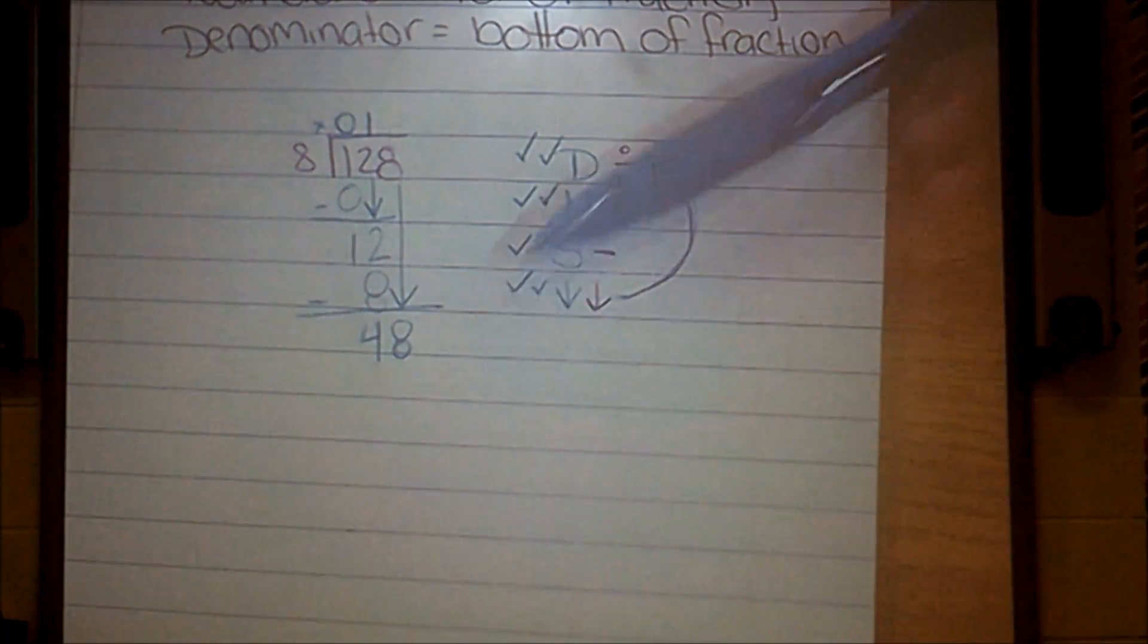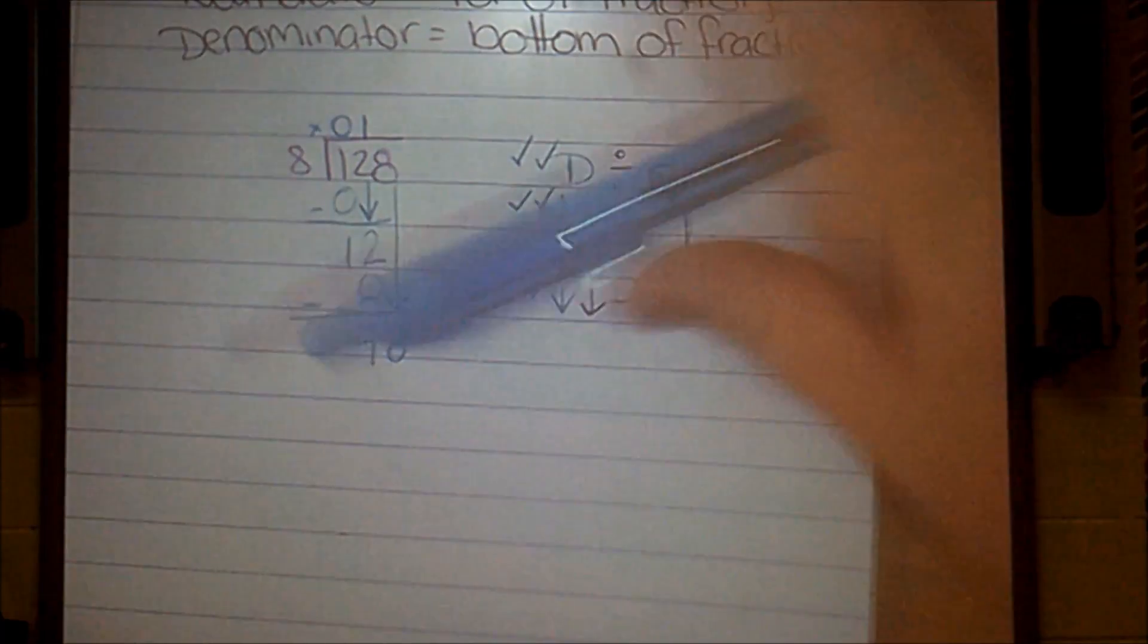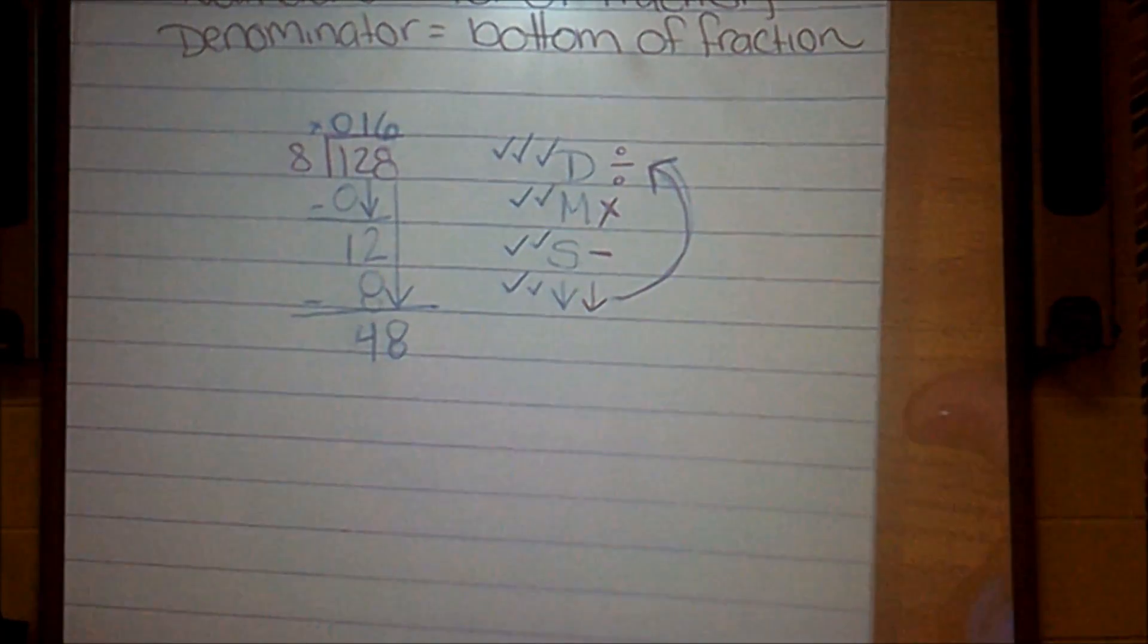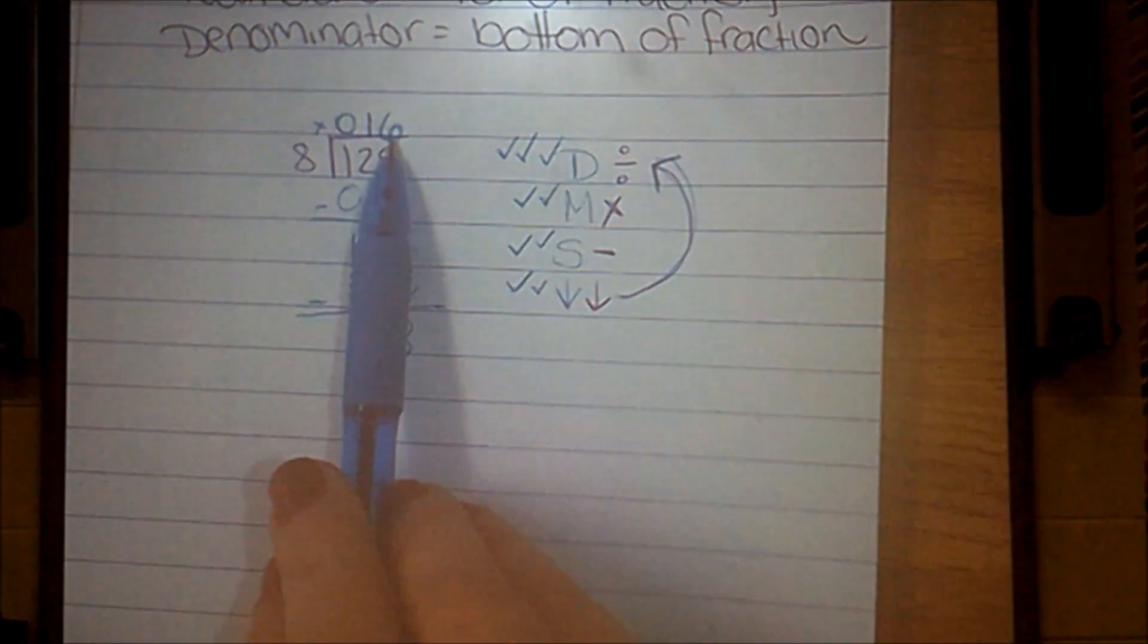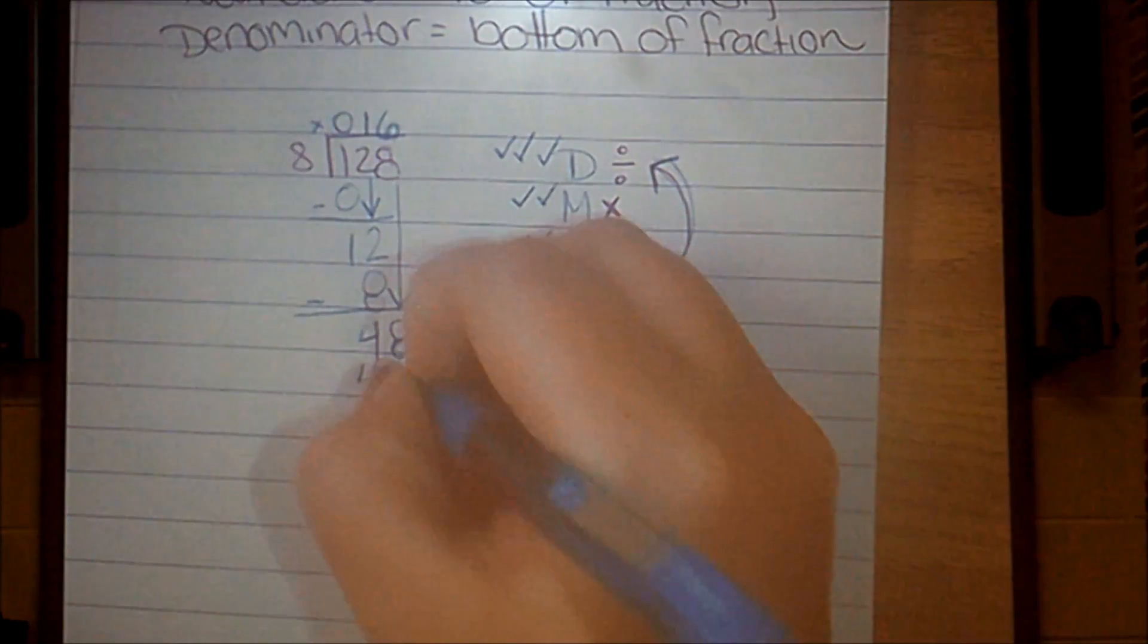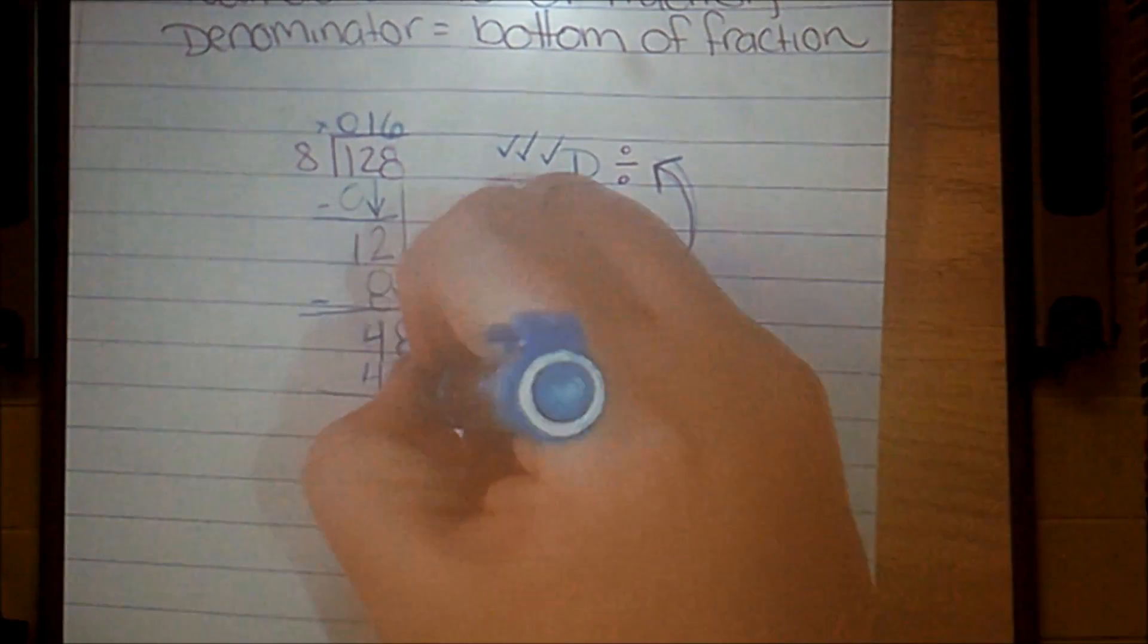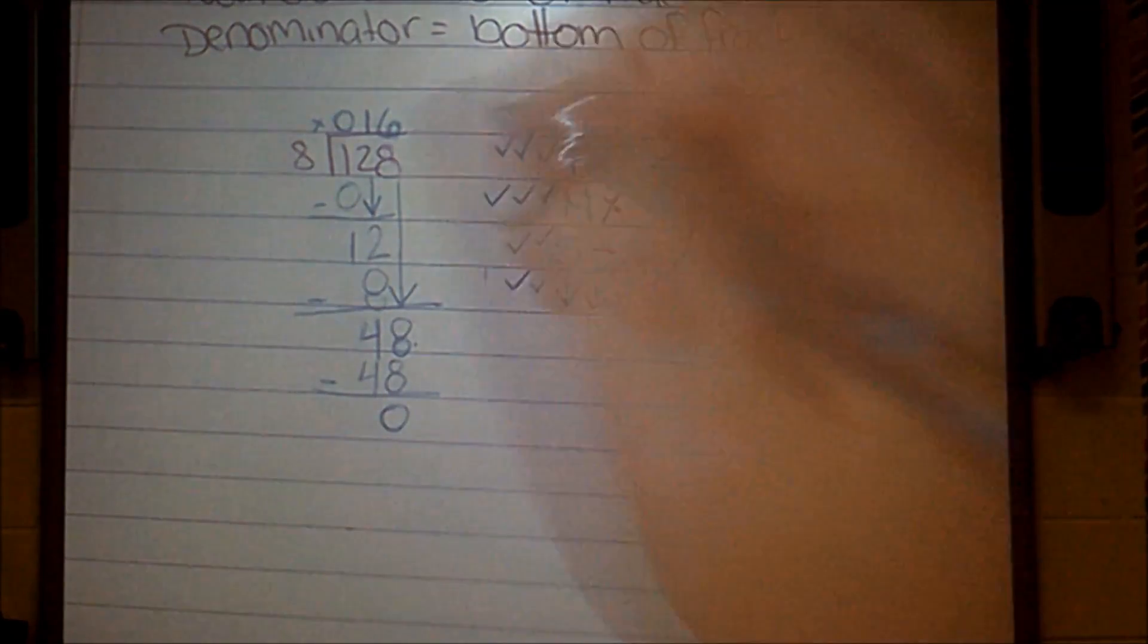Well, 8 can go into 48—let's see. I have 8, 16, 24, 32, 40, and 48. So 8 can go into 48 six times. Check it off my list. Multiply. Again, I'm multiplying my number on the outside of my cave by the digit I just put above my cave. So 8 times 6 is 48. Check it off my list. My next step is to subtract. 48 take away 48 is 0.